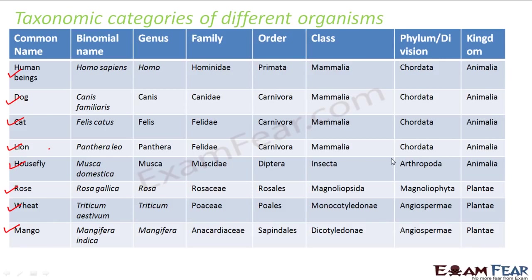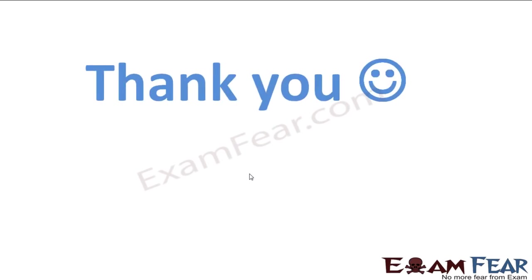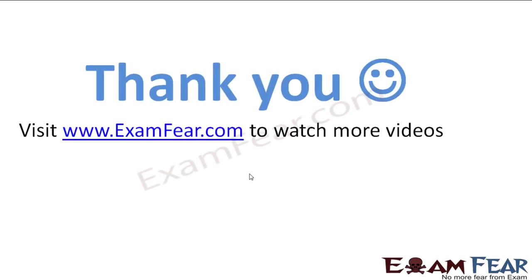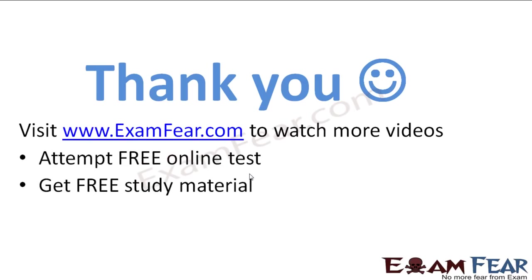Our next topic would be taxonomical aids. There we will see how we give such binomial names — how exactly it is done in real life. It is very easy to say theoretically that we have these categories and whenever you find a new organism just put it into one of these categories, but how do we actually do that? That is what we will see in taxonomical aids. Thank you. Please visit examfear.com to watch more videos, attempt free online tests, get free study material, and find tutors and mentors. Thank you once again.